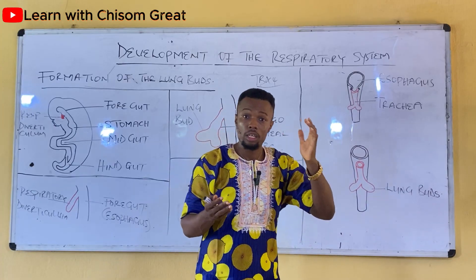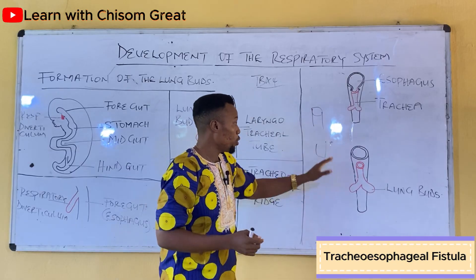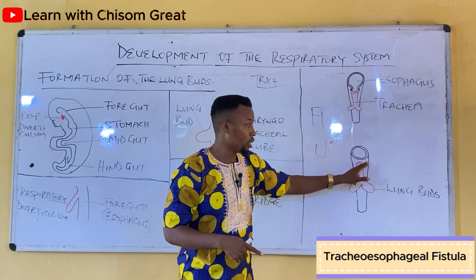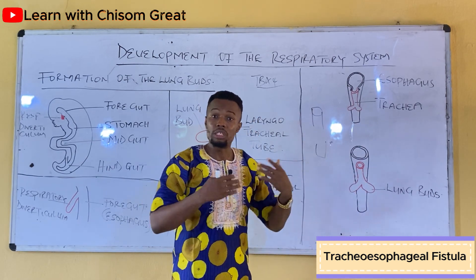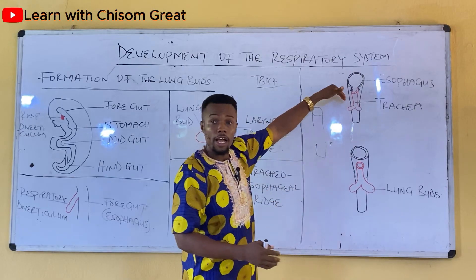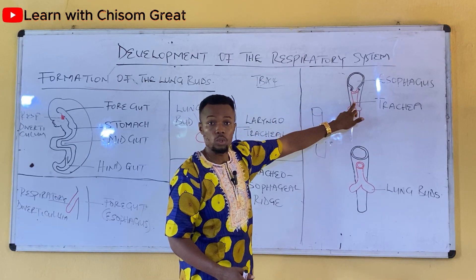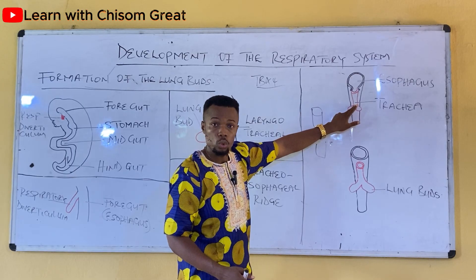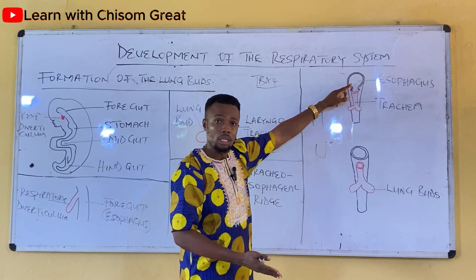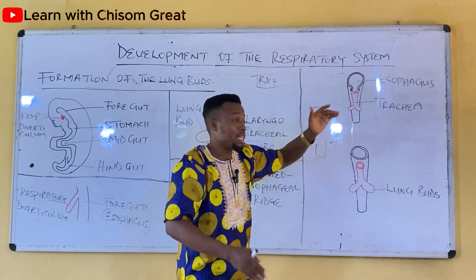The abnormal separation can also lead to tracheoesophageal fistula, where there is an open communication between the trachea and the esophagus. This can be complete or incomplete. Incomplete means that perhaps the upper part fuses but the lower part does not, or vice versa. When it is complete, the tracheoesophageal septum refuses to fuse in entirety.